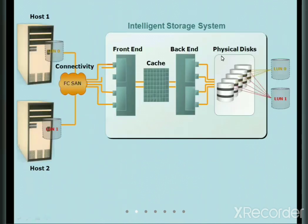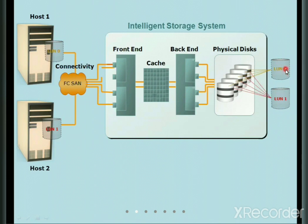In the diagram, we have Host 1 and Host 2 connected to the intelligent storage system. The storage system has a front end, cache, back end, and physical disks. The physical disks are grouped into logical unit 0 and logical unit 1. These grouped disks appear to each host as one single disk — logical unit 0 is provided as one particular disk.